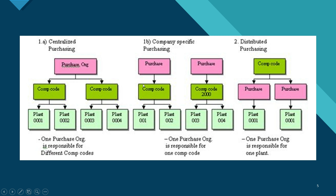The third type is distributed purchasing, wherein multiple purchasing organizations can be assigned to one company code. Each purchase organization is responsible for the procurement activity of one plant — so one purchase organization deals with the purchasing activities of one specific plant.